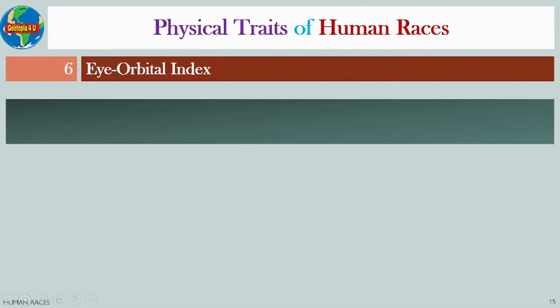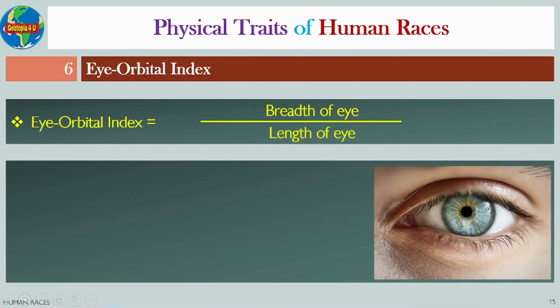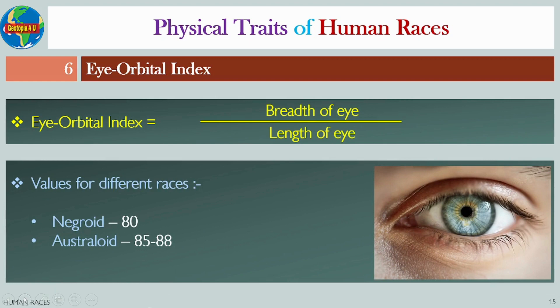Number six: Eye orbital index. Eye orbital index can be defined as the ratio between the breadth of the eye and the length of the eye. The values of the eye orbital index for various races are: Negroids, 80; Australoids, 85 to 88; and Mongoloids, greater than 88.